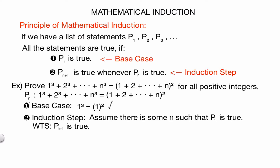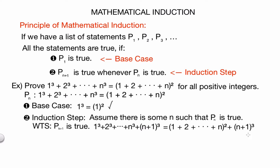Let's plug in p_(n+1). On the left-hand side, we get the summation of all the cubes up to (n+1) cubed. From our assumption that p_n is true, we know the sum up to n cubed equals the sum of integers up to n, all squared. So we can write that as the summation from 1 to n, all of that cubed, and then add the extra (n+1) cubed element. Now we can use Gauss's formula to change this summation into (1/2 · n · (n+1))², where Gauss's formula states that the sum of consecutive integers up to n equals (1/2)·n·(n+1).